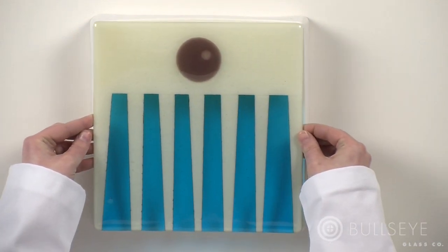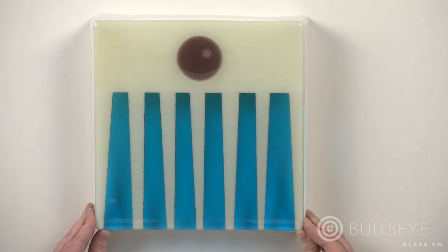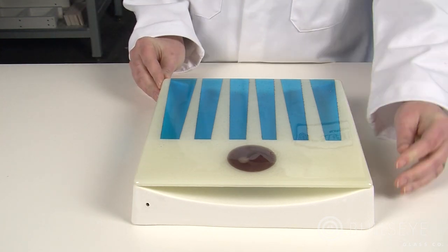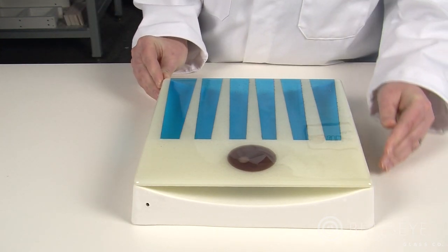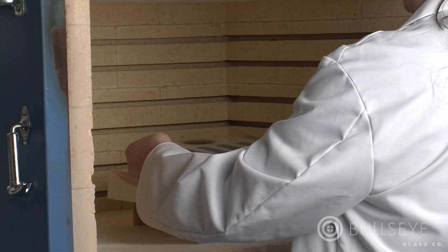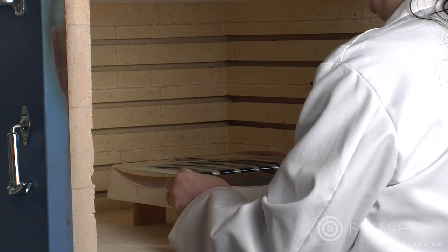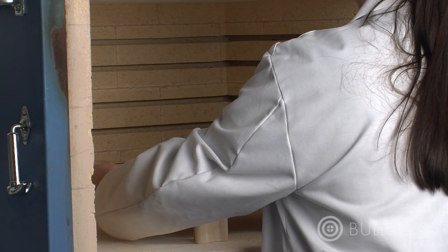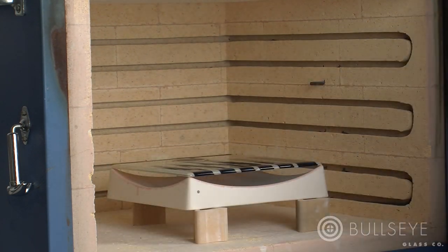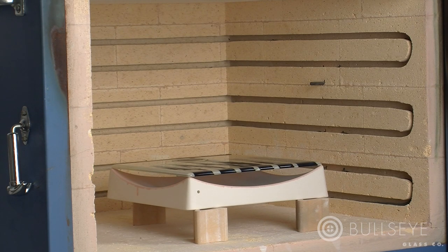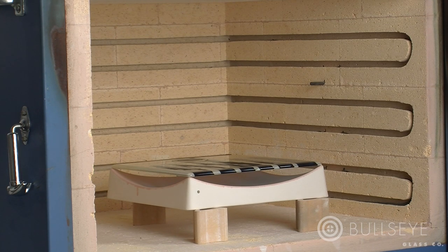When preparing to slump, especially in a front-loading kiln, you may want to center the piece on the mold outside of the kiln in order to get a better view. Often, however, you will be able to place the glass on the mold directly within the kiln. Position the mold ideally in the center of the kiln and 2 or more inches away from the elements. Elevate it with shelf posts to promote even heating and cooling in the firing chamber.